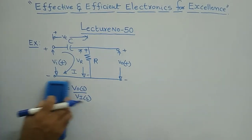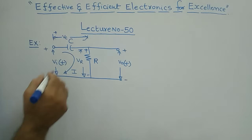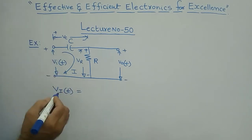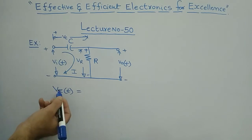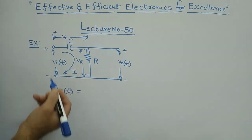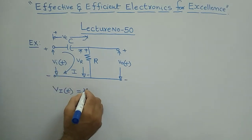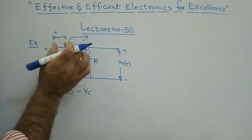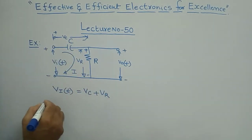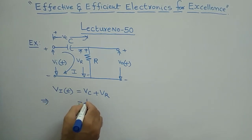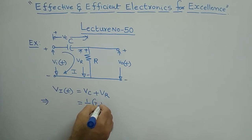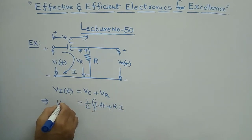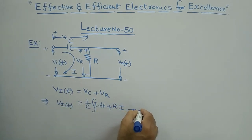Applying KVL (Kirchhoff's Voltage Law) in the loop, we can write: V_i(t) equals the sum of voltages across each element, which is V_C plus V_R. Substituting, V_C equals (1/C)·∫I dt, and V_R equals R·I. So the loop equation is: V_i(t) = (1/C)·∫I dt + R·I.